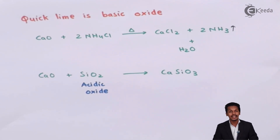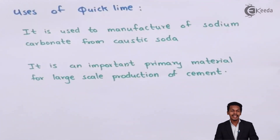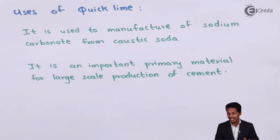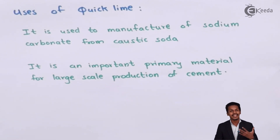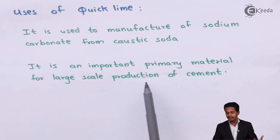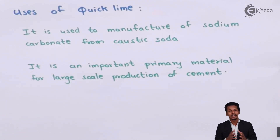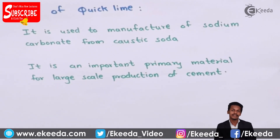Now let us move on to the uses of calcium oxide. It is used to manufacture sodium carbonate (Na2CO3) with the help of caustic soda (NaOH) — when CaO is dissolved in NaOH, we can obtain sodium carbonate. It is also an important primary material for large-scale production of cement, where quicklime is the main ingredient. Quicklime reacts with water and gives strength to cement, which is why cement is so widely used today.